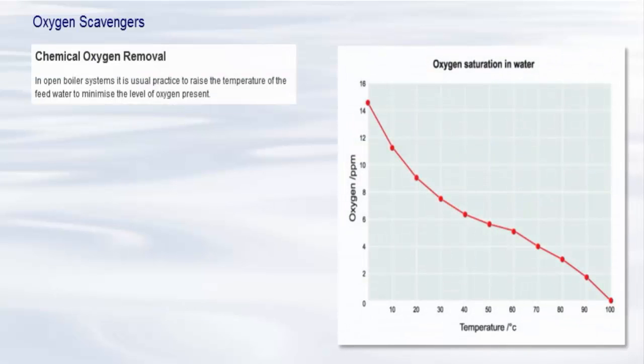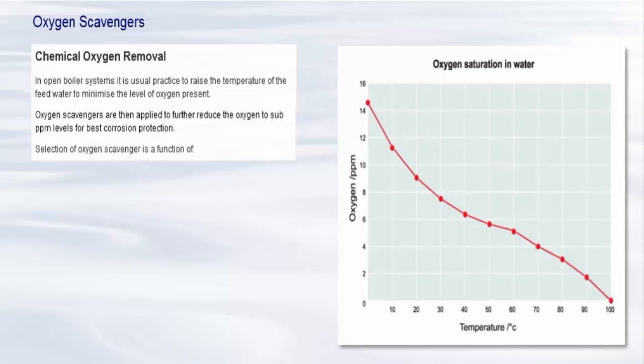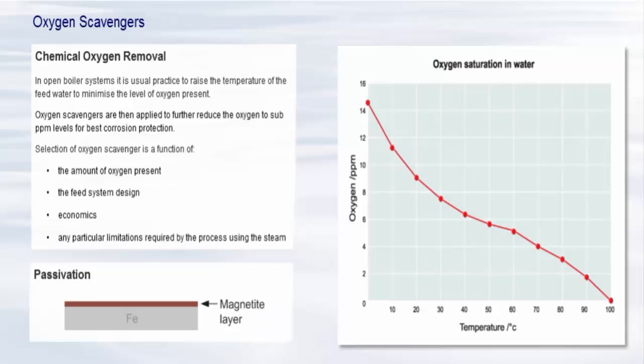In open boiler systems, it is usual practice to raise the temperature of the feed water to minimize the level of oxygen present. Oxygen scavengers are then applied to further reduce the oxygen to sub-PPM levels for best corrosion protection. There are various types of oxygen scavenger available to carry out this task, and selection of the best approach is a function of the amount of oxygen present, feed system design, economics, and any particular limitations required by the process using the steam. Some oxygen scavengers such as DEHA, hydrazine and carbohydrazide promote a protective iron oxide film called magnetite that further enhances corrosion protection.